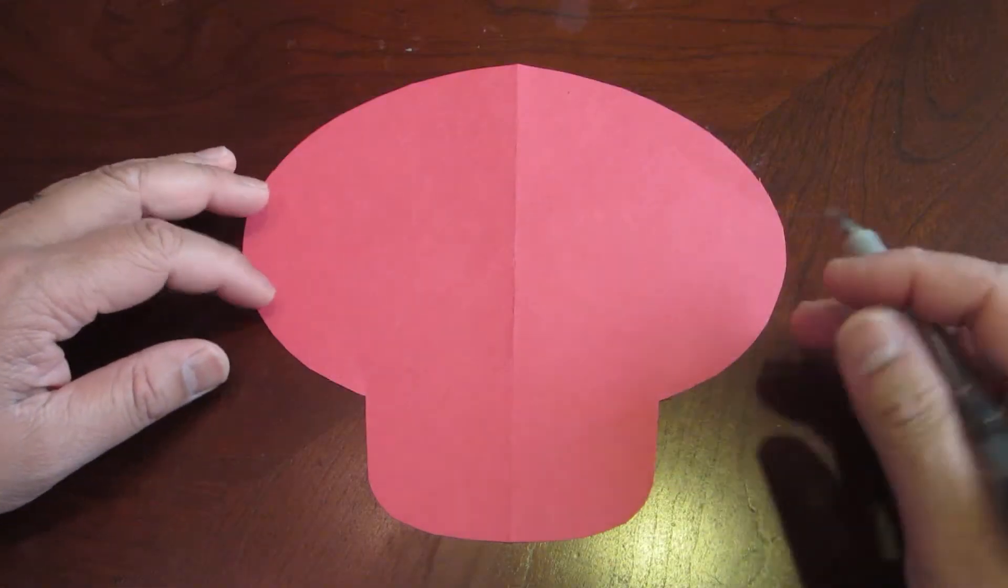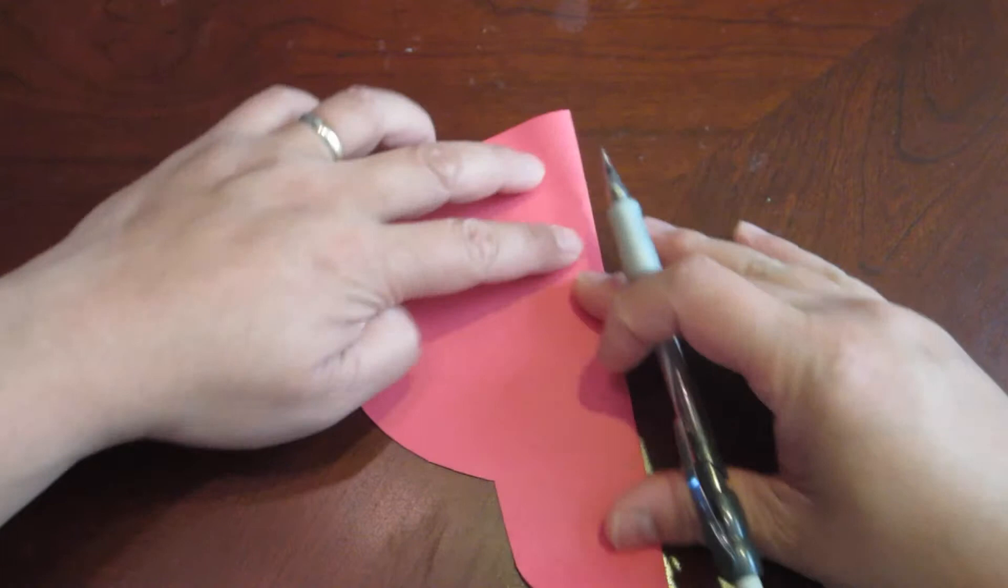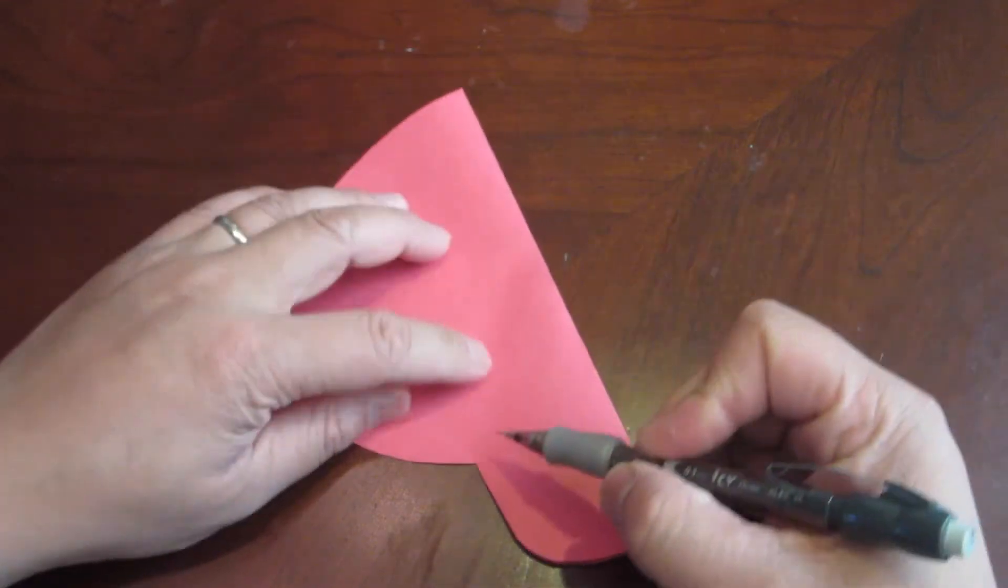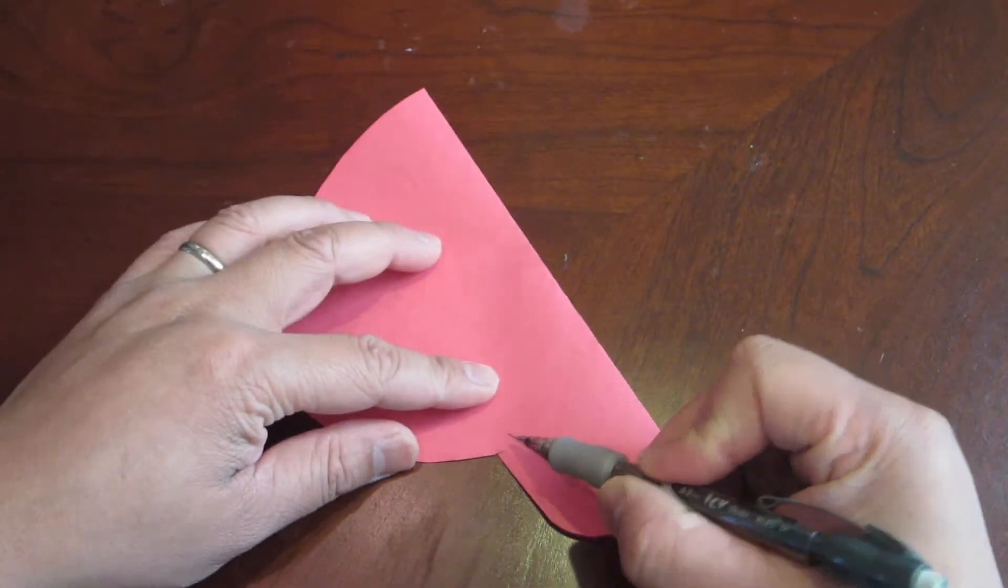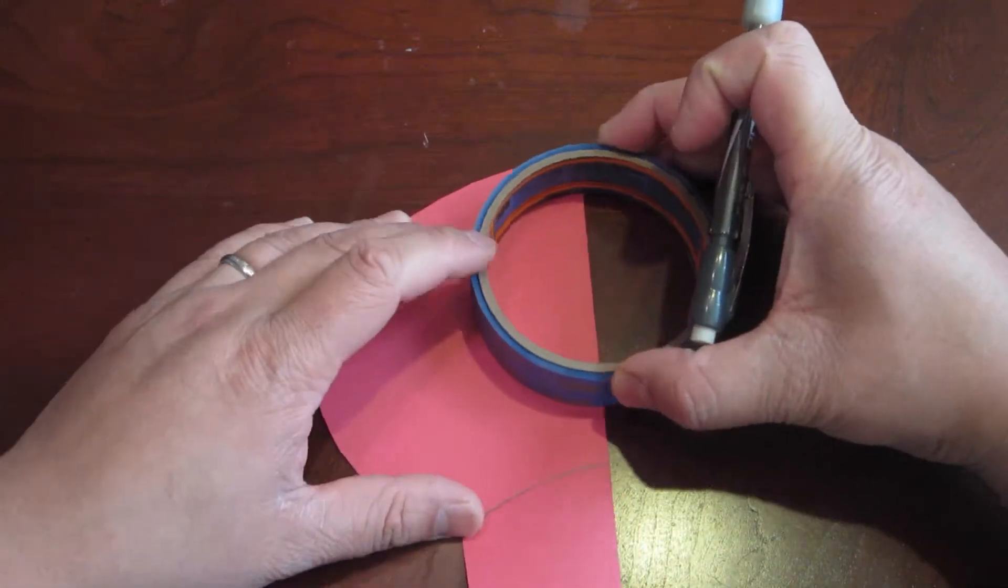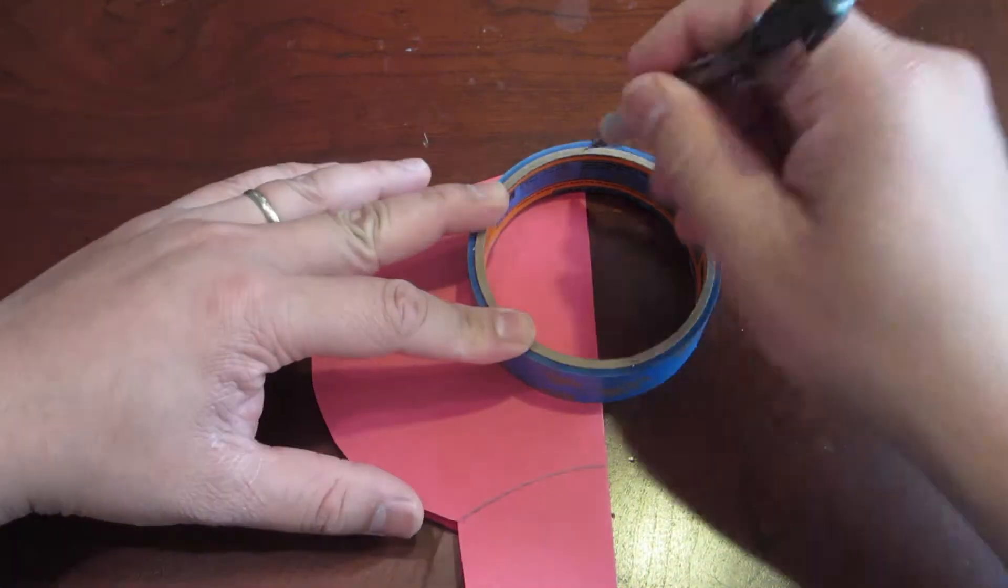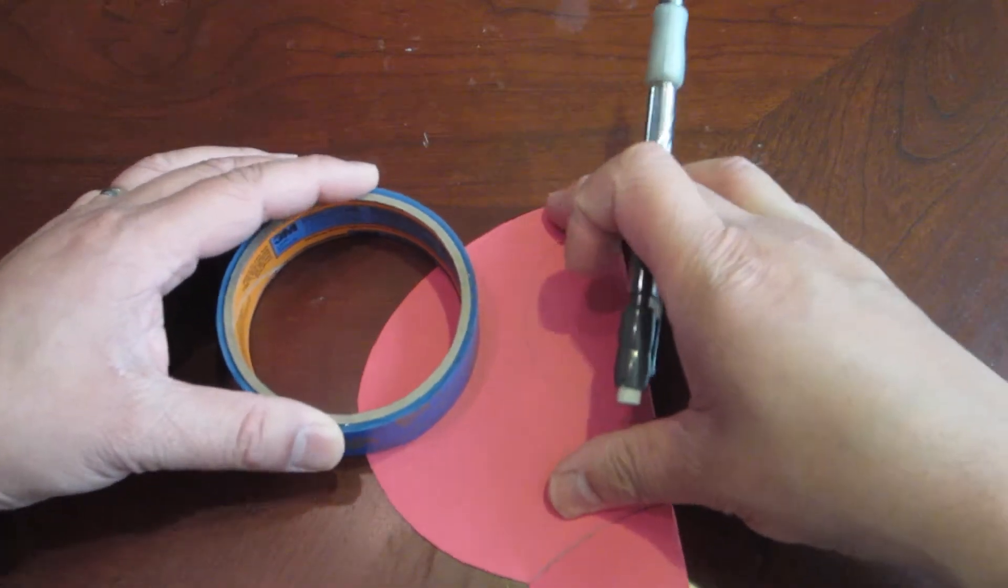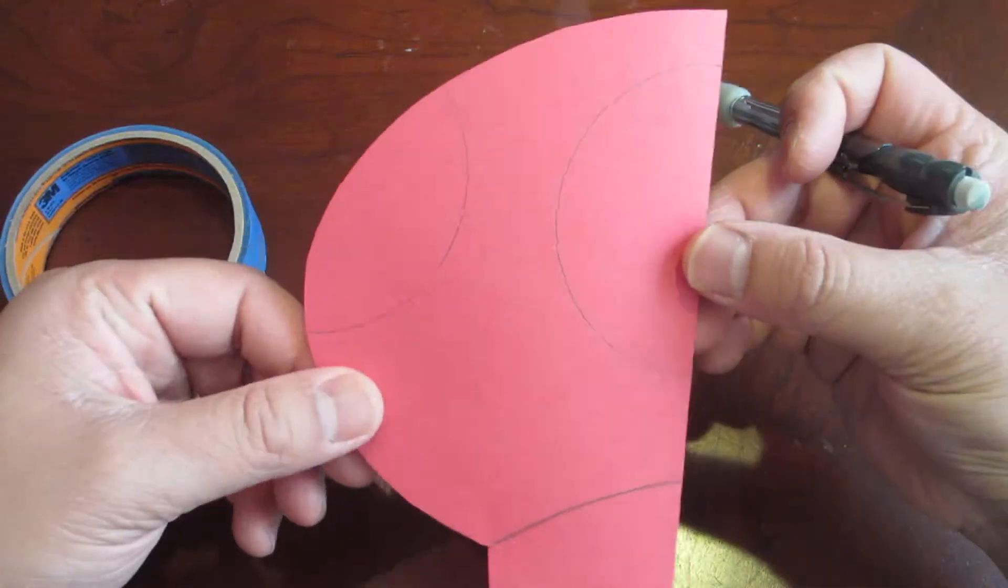Now we are going to do cut outs for the top of the mushroom. Fold the red paper in half, draw an arch like this, then use your circular object and trace out half of a circle like this. Next, trace out on the side and center up, a portion of a circle like this.